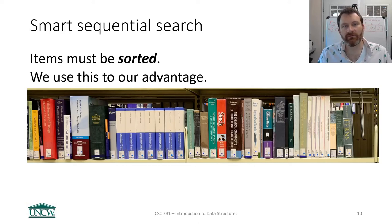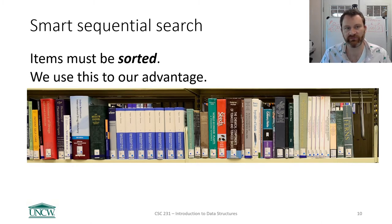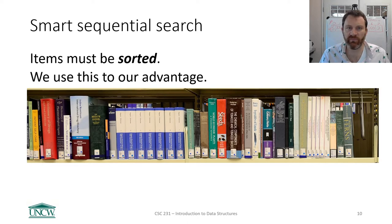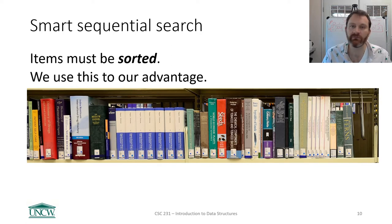Hi everyone. Our second search algorithm is the smart sequential search. It basically works like sequential search, but we can get a little bit of an improvement if our items are sorted. In fact, smart sequential search only works if the items in the list are sorted.